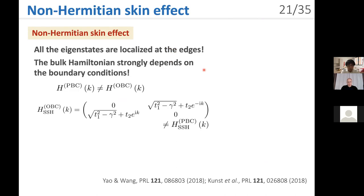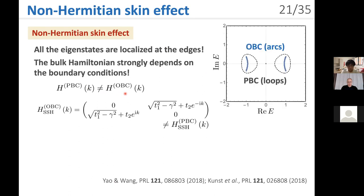The bulk Hamiltonian strongly depends on the boundary conditions. The bulk Hamiltonian under periodic boundary conditions is different from the one under open boundary conditions — this is impossible in Hermitian systems. For the non-Hermitian SSH model, the bulk Hamiltonian is indeed different depending on the boundary conditions. The periodic boundary spectra form loops in the complex energy plane, but the open boundary spectra form arcs, and they are clearly different.